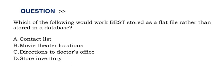Option A: Contact List. Option B: Movie Theater Locations. Option C: Directions to Doctor's Office. And Option D: Store Inventory.